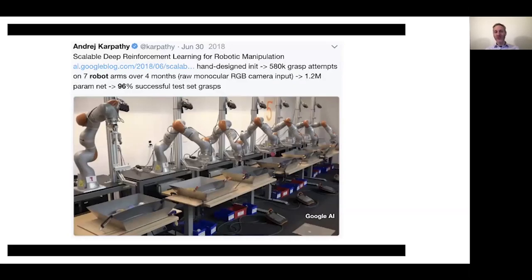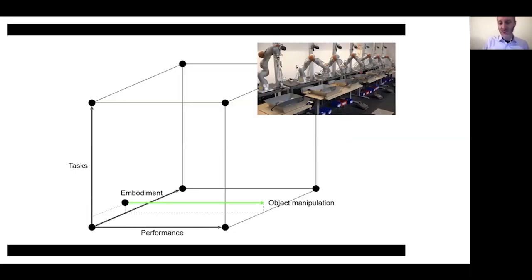Here's an example: some amazing work by Karpathy working with Google, using the arm farm — seven robot arms trained over four months, 580,000 grasp attempts generated data to train a 1.2 million parameter neural network. At the end of those four months, these arms were exposed to a set of new objects and performed well 96% of the time — an incredible experiment. But if we embed this in our space, it gives us a line that moves through a horizontal cut through the cube: these seven arms all have exactly the same embodiment, and that embodiment did not change over the four-month period.